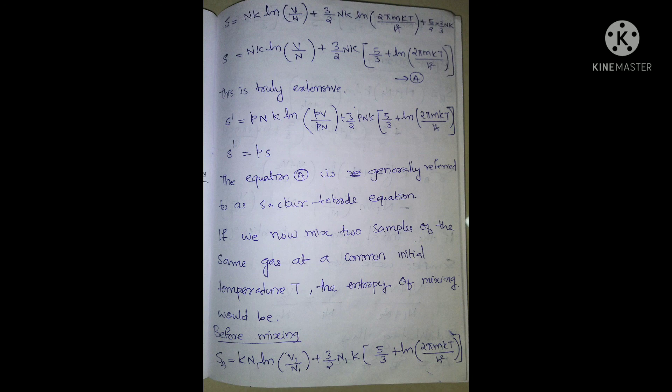In the past, the first term was nk log V. Now the first term is nk log(V/n). We substitute pV by pN, then p and p cancel. We can now see the entropy equation is extensive. This equation is called the Sackur-Tetrode equation.